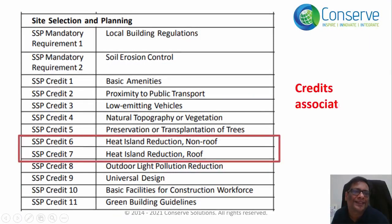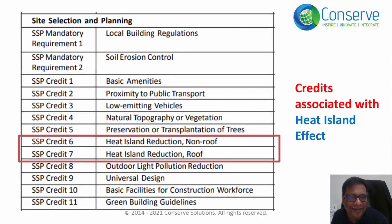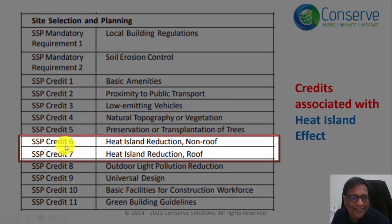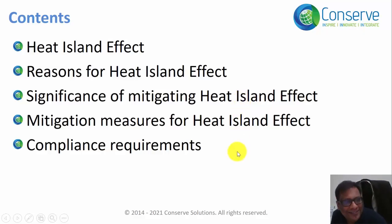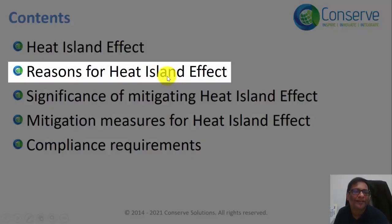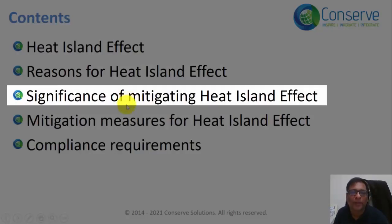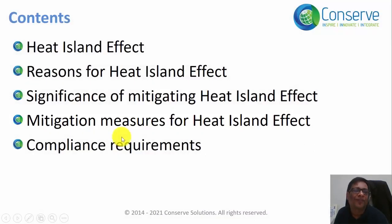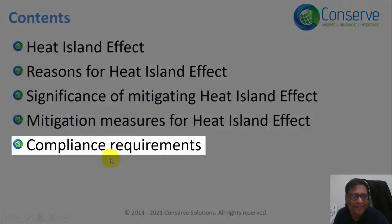The next group of credits in site selection and planning is associated with heat island effect. There are two credits: Credit 6, Heat Island Reduction Non-Roof, and Credit 7, Heat Island Reduction Roof. In this recording we will discuss what is heat island effect, the reasons for it, the significance of mitigating it, mitigation measures, and finally compliance requirements for the associated credits.